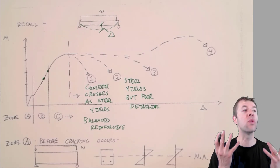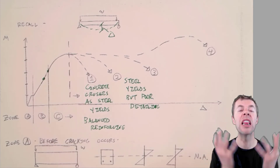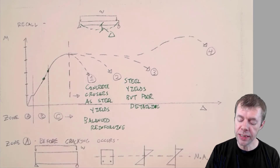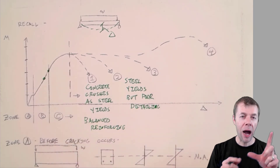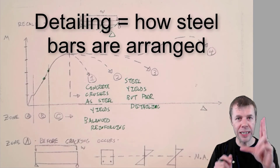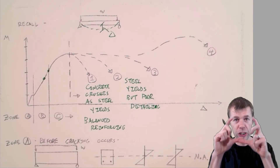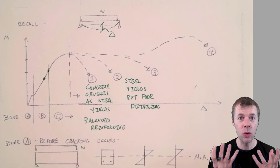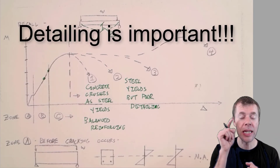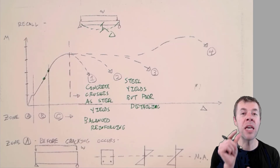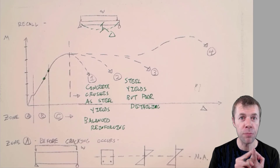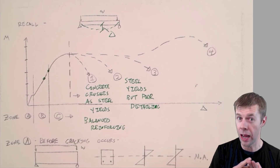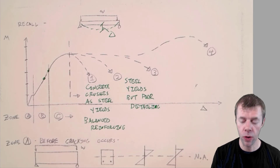Case number two: your steel yields — and yielding is good, it gives you warning, it lets you know something is going on, it lets you call for help. But if you have poor detailing — meaning how the bars are designed at the end, whether they're hooked or straight, how your stirrups are configured, whether there's a full hoop or a discontinuous one — that is poor detailing. Detailing is really important. Good detailing costs minimal extra during construction but saves lives and lets your structure take a huge hit and keep on going — take a licking and keep on ticking.